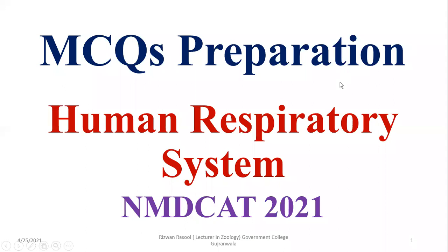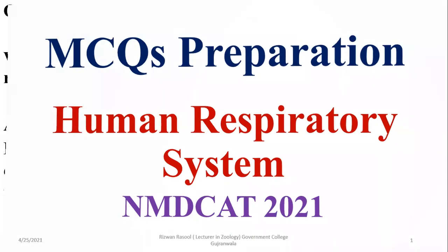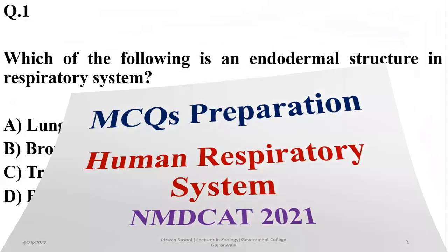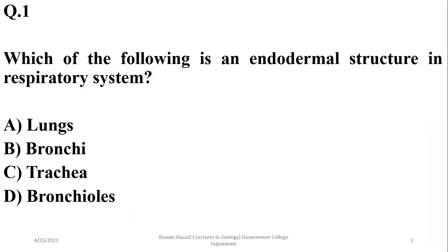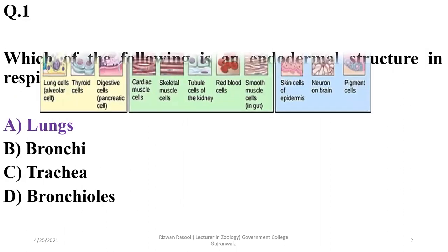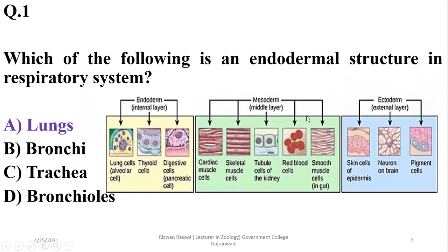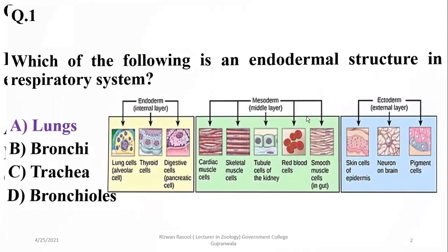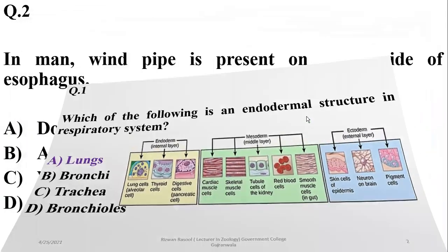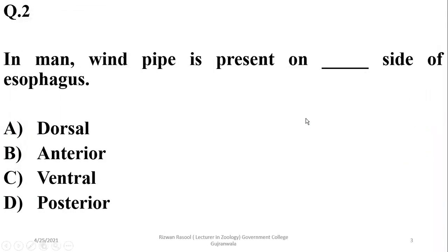In this video we are going to have a discussion about the human respiratory system based on MCQs. Question one: which of the following is an endodermal structure in the respiratory system? The answer is the lungs, which originate from the embryonic layer endoderm, while the others in the list are mesodermal structures.